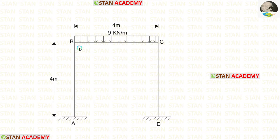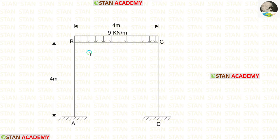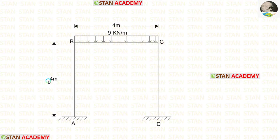In this frame, there are two columns: column AB and column CD. There is also a beam BC. In the columns, there are no loads. In the beam BC, there is a uniformly distributed load of 9 kN per meter, acting for the full span. The height of the columns is 4 meters and the length of the beam is also 4 meters.